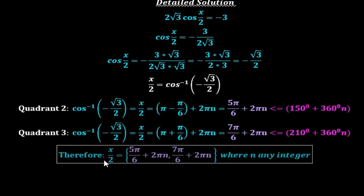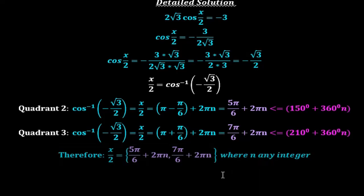Therefore the solution is: x/2 = 5π/6 + 2πn (and all its coterminals), and x/2 = 7π/6 + 2πn (and all its coterminals), where n is any integer from negative infinity to infinity.